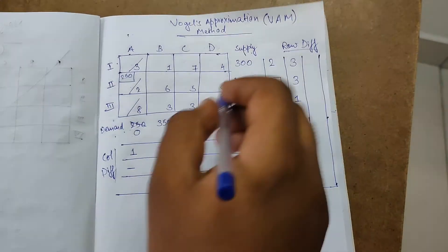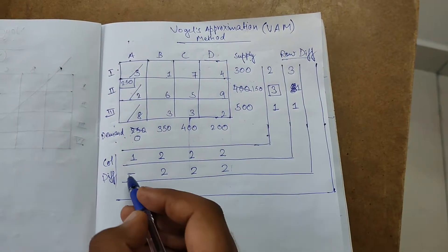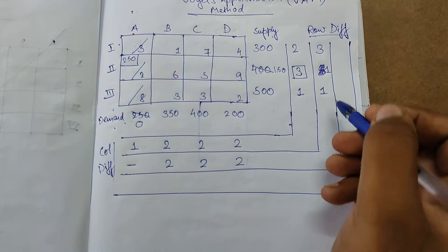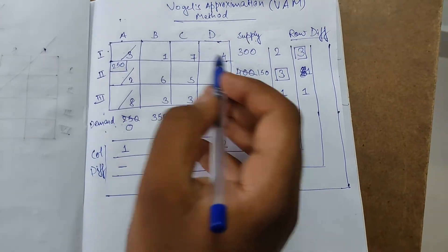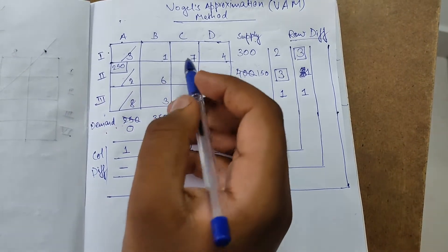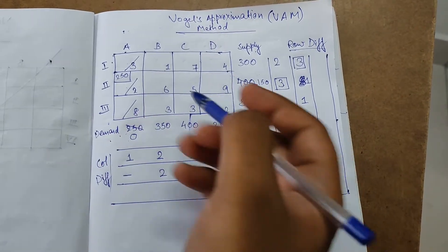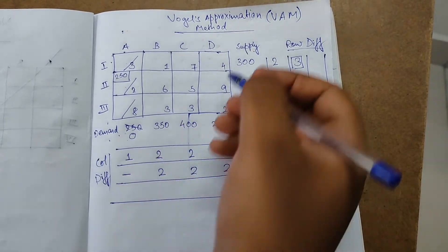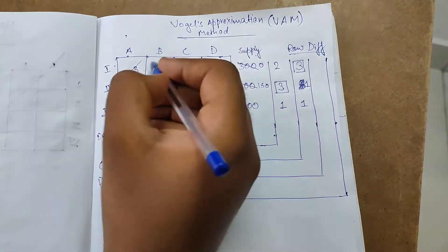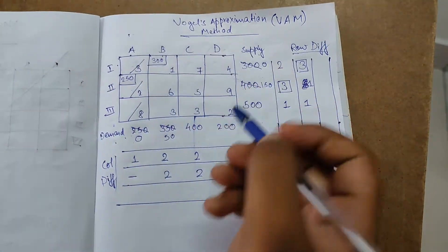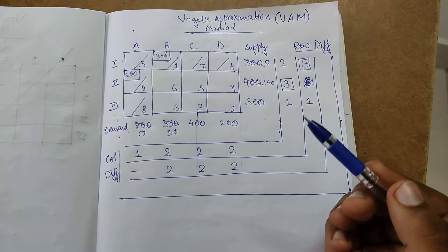Continuing: six and five gives a difference of one; three and two gives a difference of one. The maximum in this iteration is three. The corresponding row already has three struck off, so the least element among the rest is one. Demand is 350 and supply is 300 — supply is less. Subtract 300: supply becomes 0 and demand becomes 50. Write 300 in the small box and strike off that row.